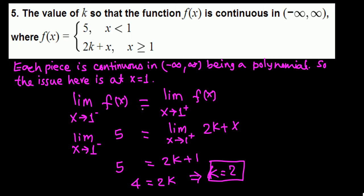The value of k is 2. That means if k is 2, this function is continuous. The piece from the left side and from the right side come to the same place.